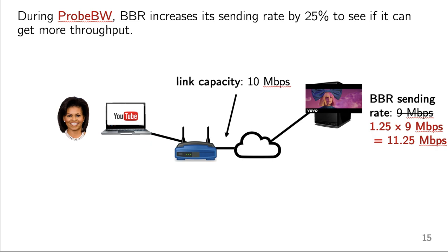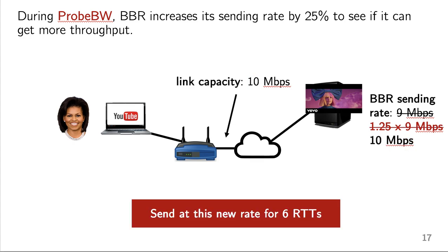So during probe bandwidth, again for one RTT, BBR is going to increase its steady state sending rate by 25% to see if it can get more throughput. In this example, that means BBR will increase its rate to about 11.25 megabits per second. But obviously, that's over the link capacity, right, which is only 10 megabits per second. So BBR is only going to see that it can get 10 megabits per second. But that was higher than it got before, so that's going to be its new sending rate. So we can see that when BBR is alone, probe bandwidth allows BBR to both maximize throughput and minimize delay by figuring out exactly how much bandwidth is available.